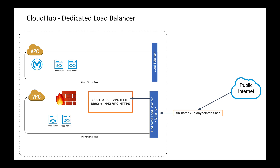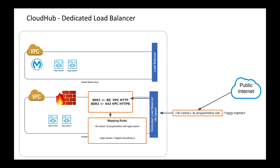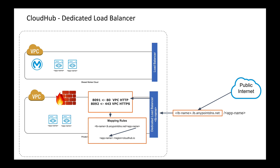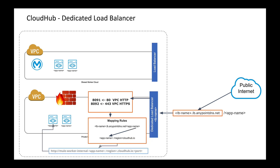In addition to changes in the ports, in terms of how routing is set up with the dedicated load balancer, you can actually set up different mapping rules. The most basic one is when you put a forward slash app name — that will set the mapping and route the request to appname.region.cloudhub.io, similar to the public load balancer routing to the underlying worker. Once the request is mapped to that specific underlying worker, traffic is routed to that worker and the response is returned to the end user.